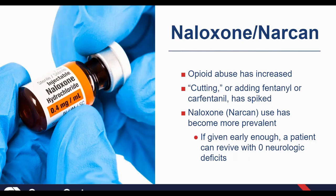Naloxone, better known as Narcan, is going to be used when you have opiate abuse. You may need to use a large amount of doses when heroin is cut with fentanyl or carfentanil. We're finding patients in respiratory depression and altered mental status, quickly being given Narcan, and those patients, if found soon enough, recover with zero neurological deficits. The earlier we can give it, the better — which is why community kits were introduced, and why patients on opioids are now being prescribed naloxone so they or a family member could self-administer.